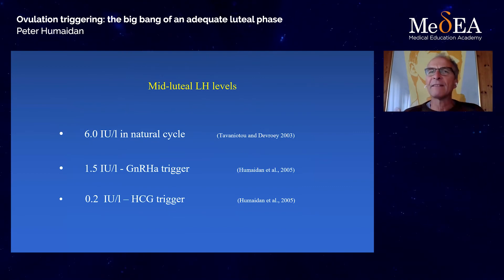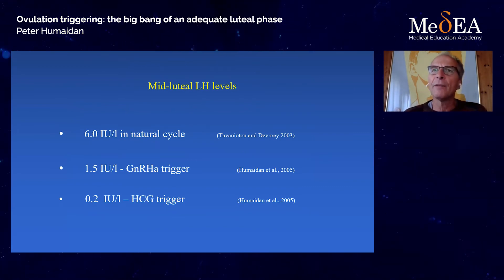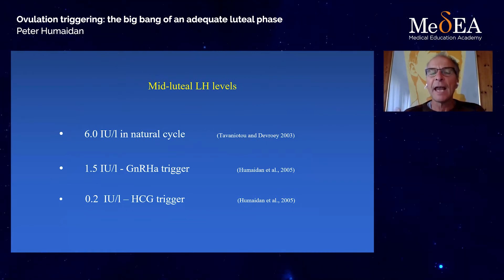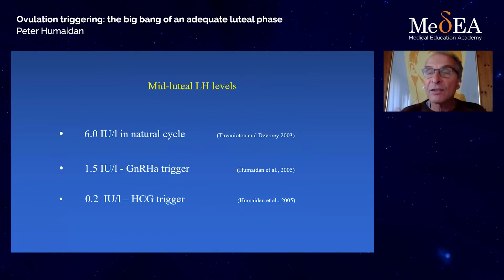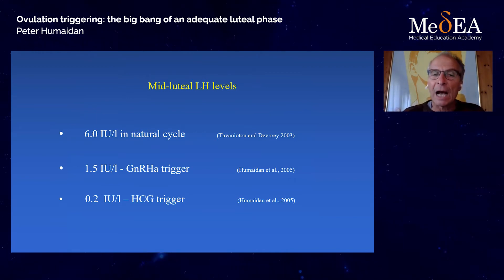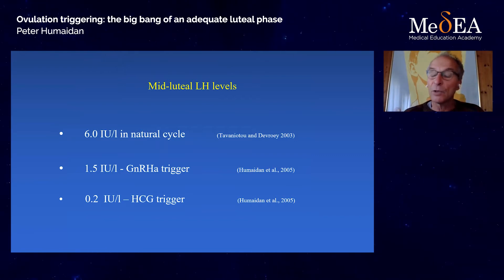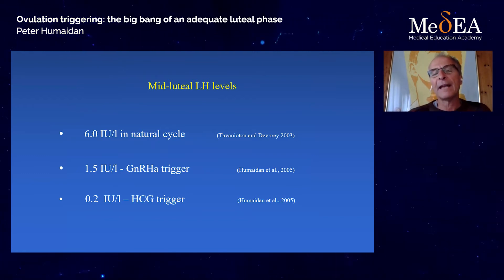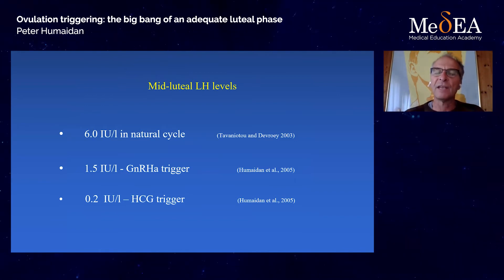What are the mid-luteal LH levels? It's around 6 to 8 IU during natural cycle in the mid-luteal phase. Once we use an agonist trigger, the amount of LH released is significantly lower, with a reduction of nearly 75% in mid-luteal LH levels. When we use an HCG trigger, it looks even worse — but we have the HCG to cover for the LH activity deficiency, because we use HCG as a substitute to cover for the luteal phase insufficiency induced.